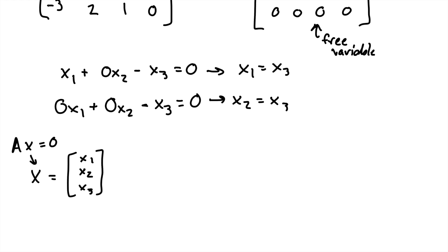But we know what X1 and X2 are. So we can rewrite this as X3, X3, and X3 is just X3. And then we can factor out an X3, and we get the vector 1, 1, 1.